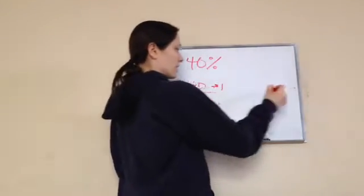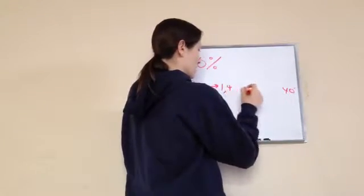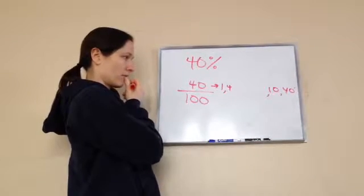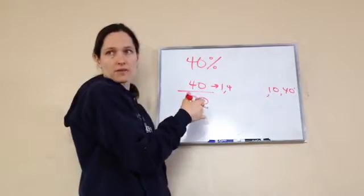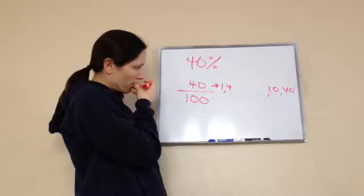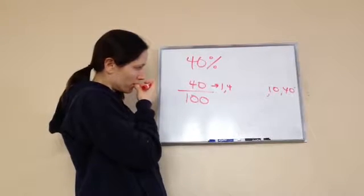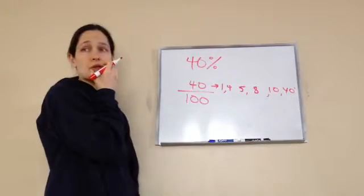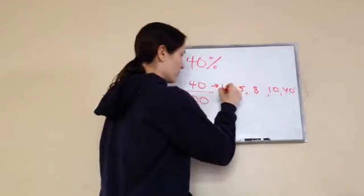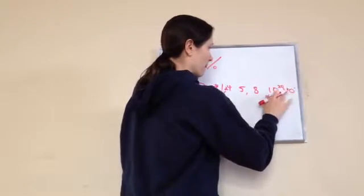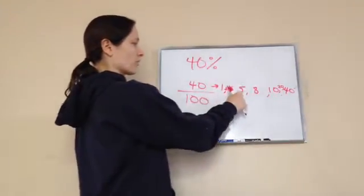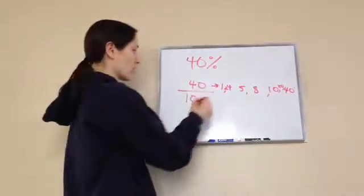So what are the greatest common factors of 40? One times 40, four times ten, five times eight, two times 20. I didn't quite put them in very good order. One, two, four, five, eight, ten, twenty, forty. What's the factors of 100?